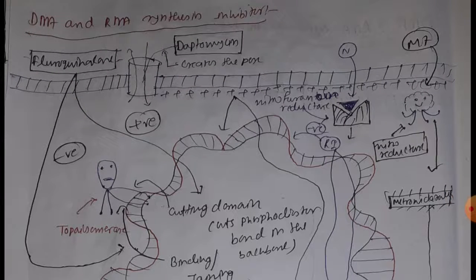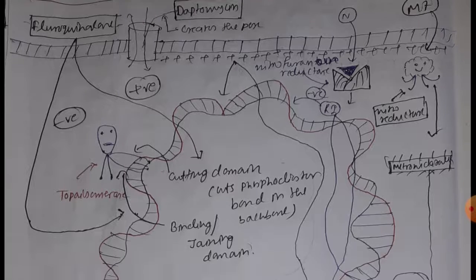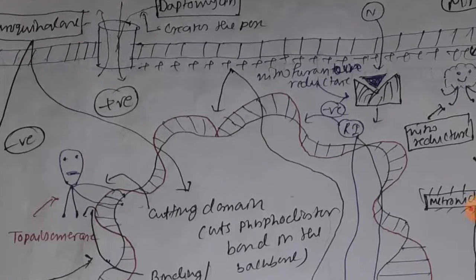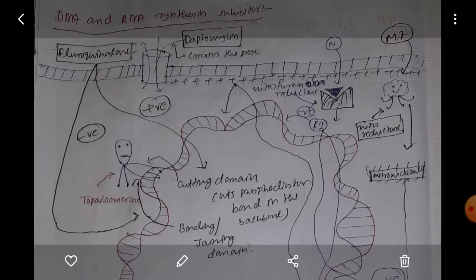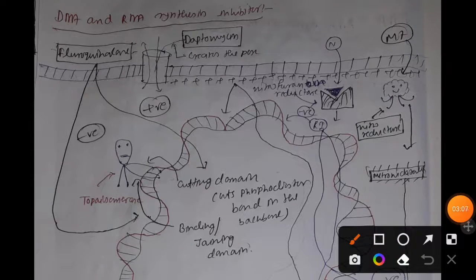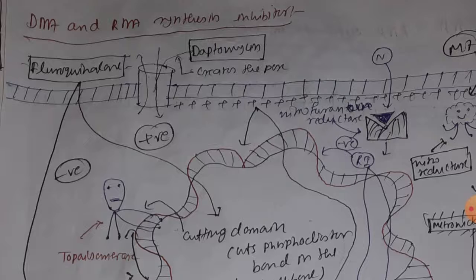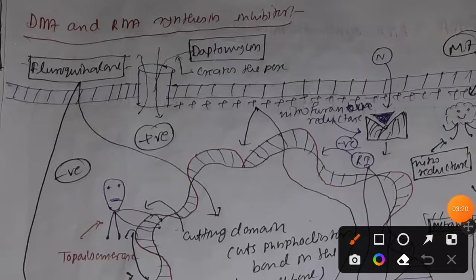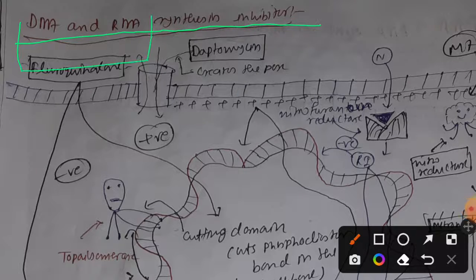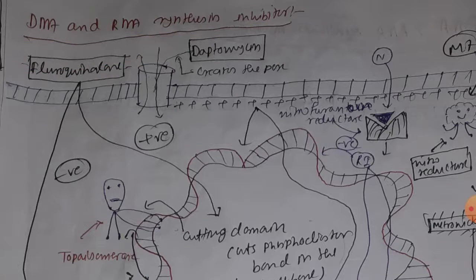Bacteria X secretes antibiotics so that competing bacteria either reduce their metabolism or die, leaving all available nutrients to be acquired by bacteria X. We are going to use those kinds of antibiotics to treat various kinds of bacterial infections. These antibiotics have various types of activity — some target DNA, some target RNA, and some target proteins.